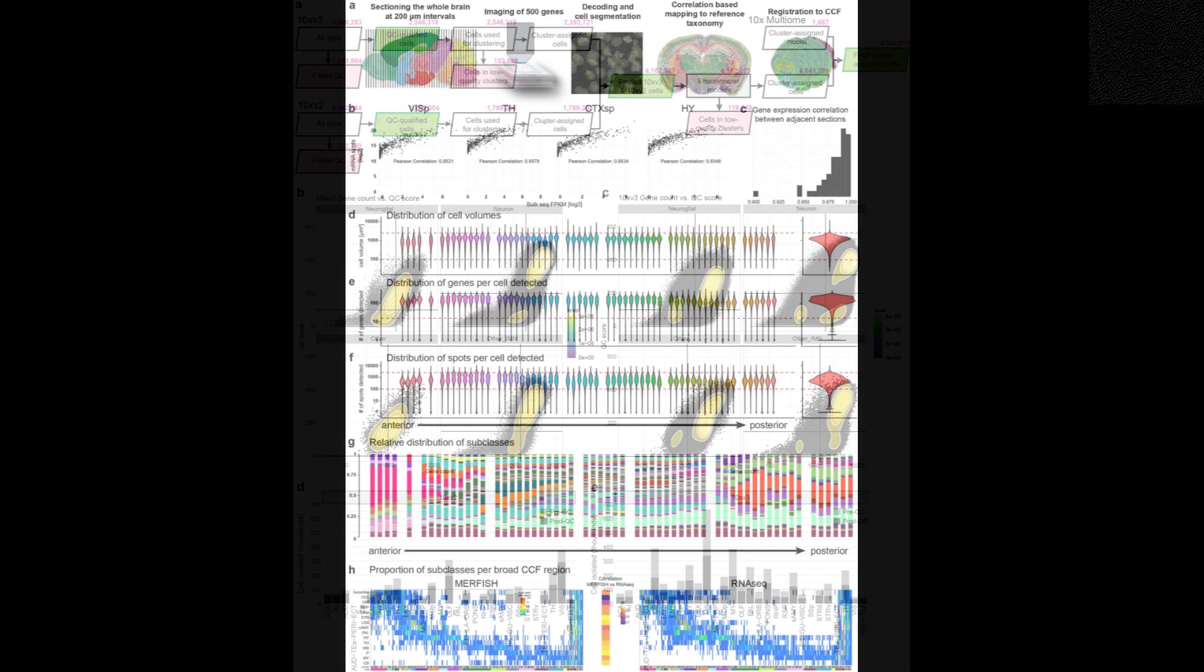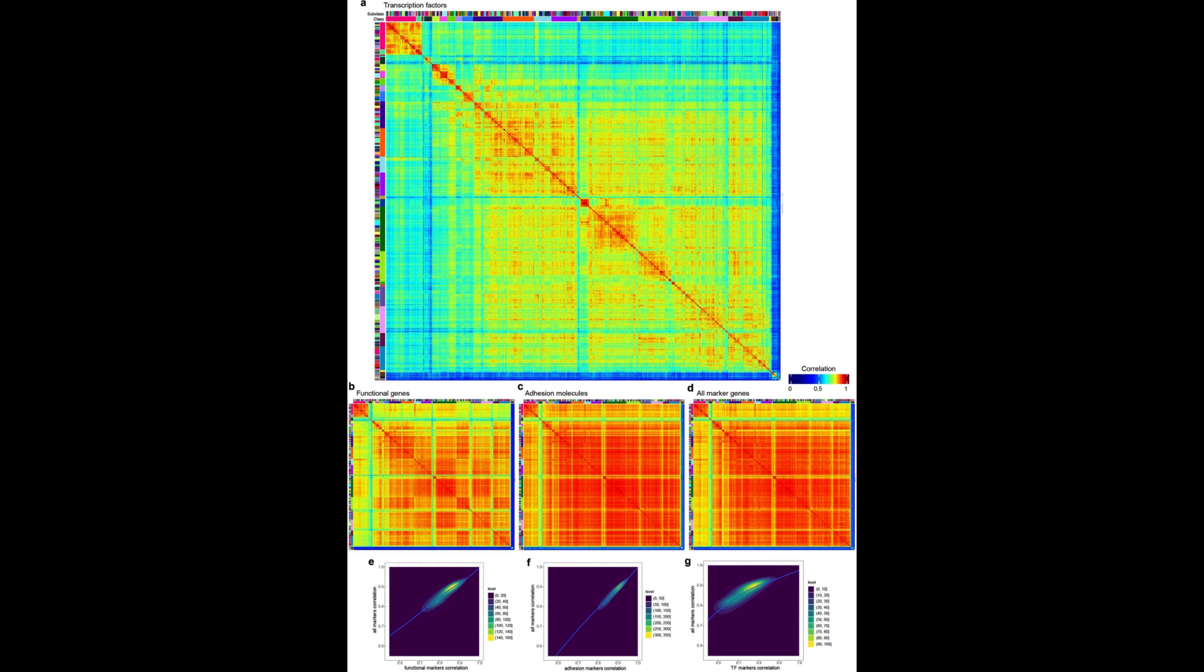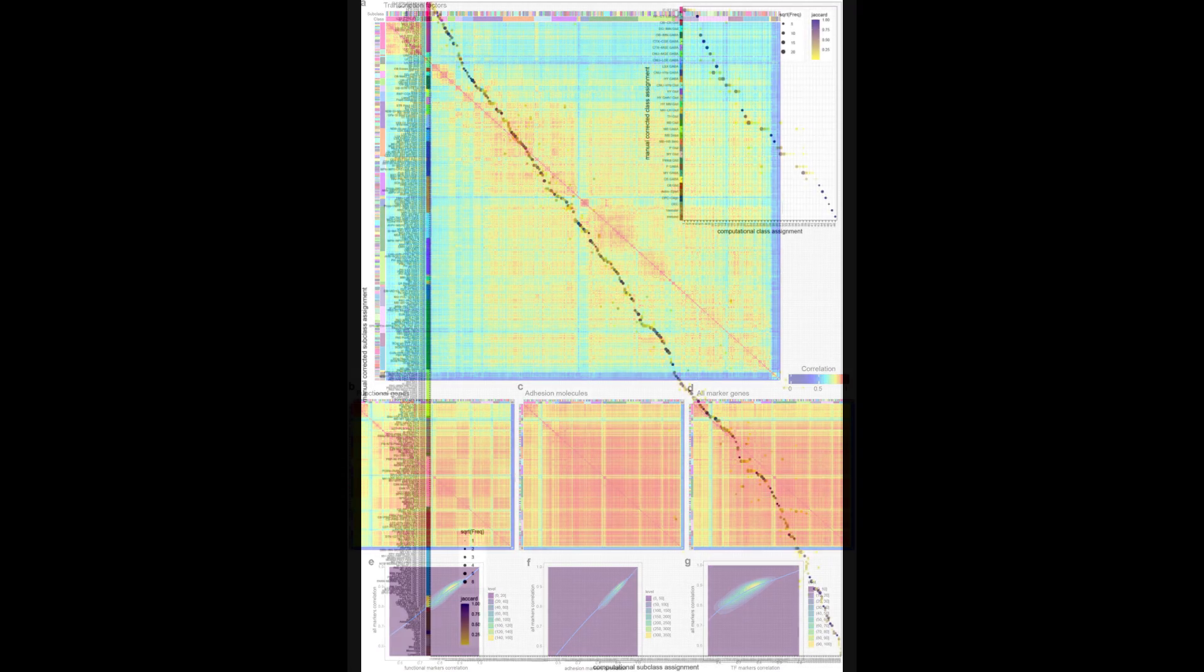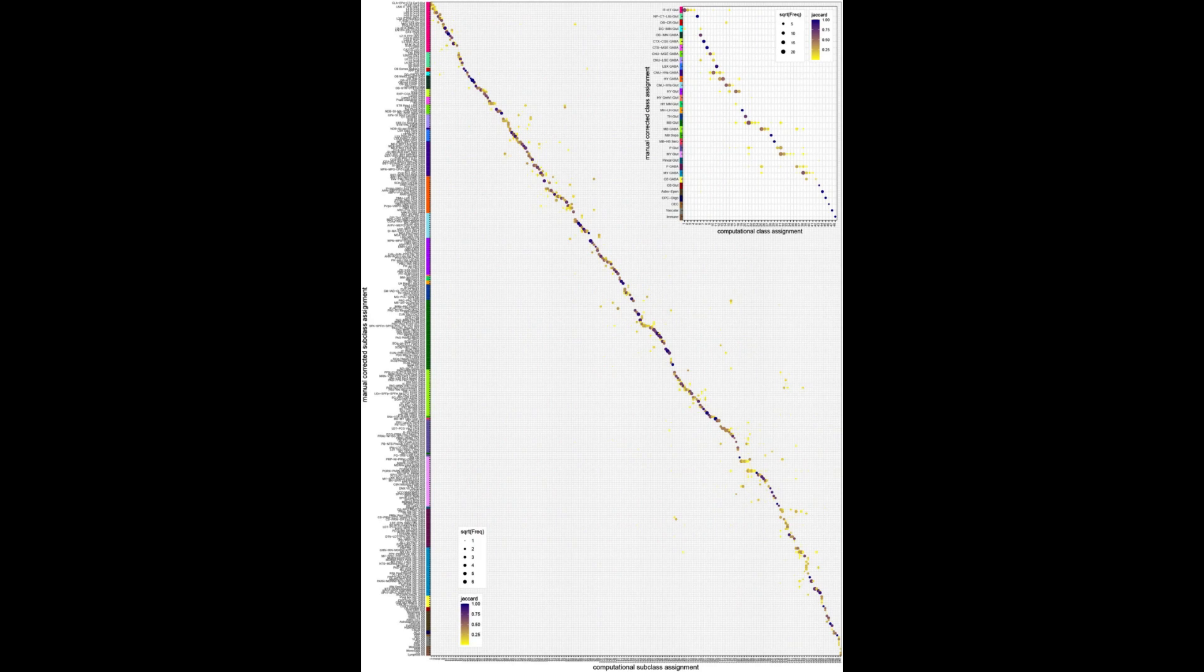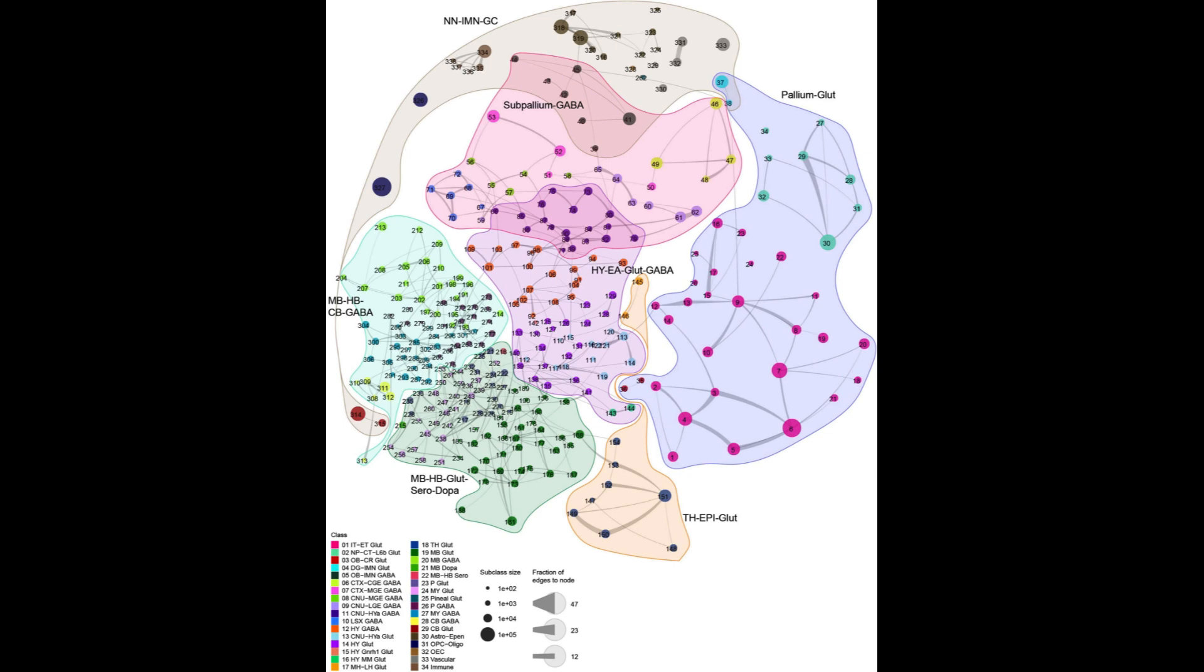The implications of this cell atlas are immense as it sets the stage for the development of precise therapeutic interventions for individuals with mental and neurological disorders. The project was made possible through funding from the National Institutes of Health's brain research through advancing innovative neurotechnologies initiative and the findings have been published in nature as part of a collection of 10 papers.